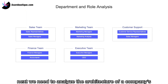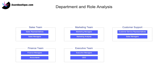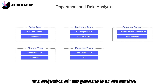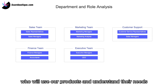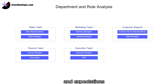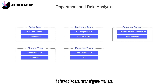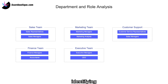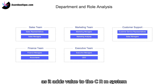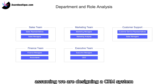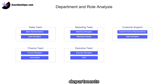Next, we need to analyze the architecture of a company's CRM system and conduct department and role analysis. The objective is to determine who will use our products and understand their needs, pain points, and expectations. For CRM products, it involves multiple roles, so conducting first-hand user research is crucial. Identifying their system requirements is key, as it adds value to the CRM system. Here are the main departments and employees who typically use a CRM system.